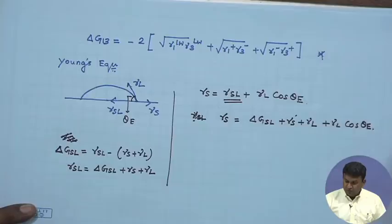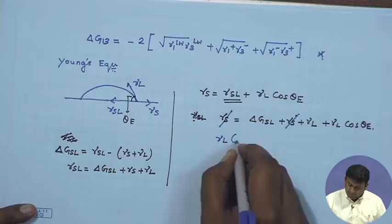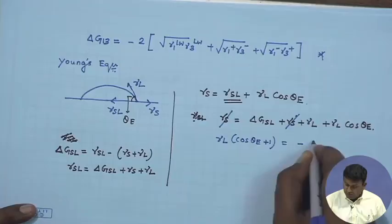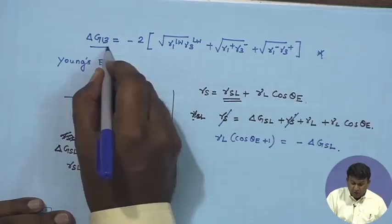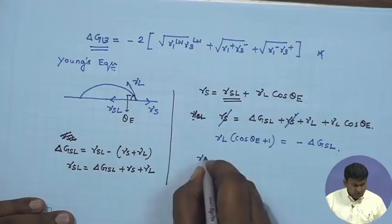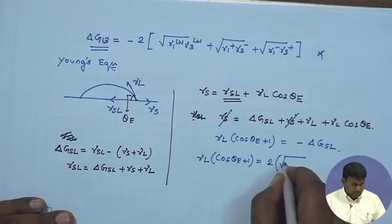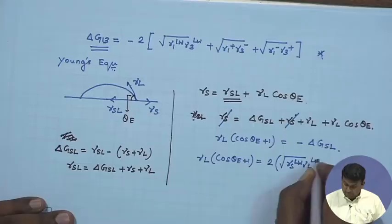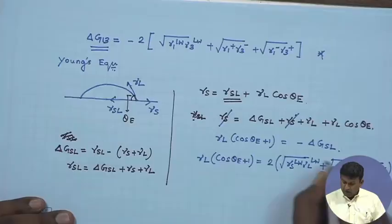This cancels out, and what you get is γ_L (cos θ_E + 1) = −δG_SL. You can take help of this equation and simply substitute the expression for δG_SL, which will give you γ_L cos θ_E + δG_SL + 1 = 2. This is now a very important expression.